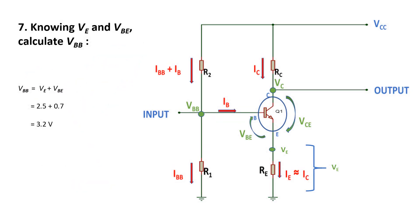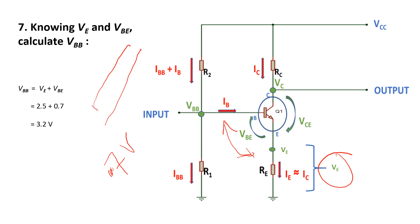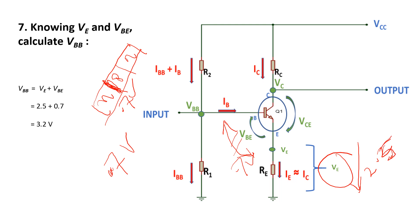Step number seven: knowing VE, we now find VBE. VBE is 0.7 volts for silicon — because this transistor is made of silicon, it's an NPN, and at this junction 0.7 volts is default. We already assumed VE is 2.5 volts in previous steps, so we calculate VB equals 2.5 + 0.7 = 3.2 volts.